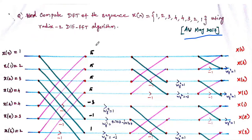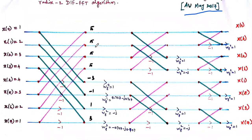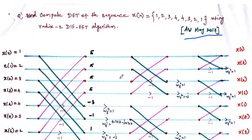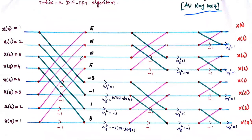For that, first we have to draw the butterfly diagram. We need to draw the eight-point butterfly since the given sequence x(n) has eight samples. So first, draw the eight-point butterfly diagram.